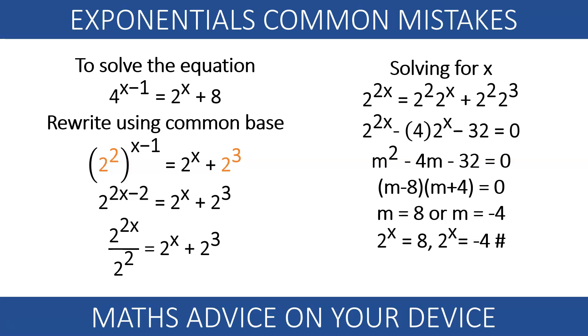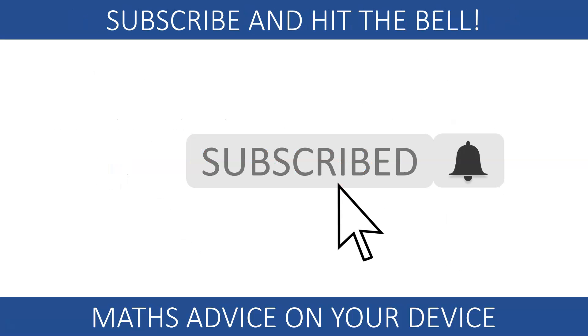2 to the x equals minus 4 is not a possible solution, because any power of 2 will always be positive. The only valid solution is x equals 3. If you enjoyed this video,